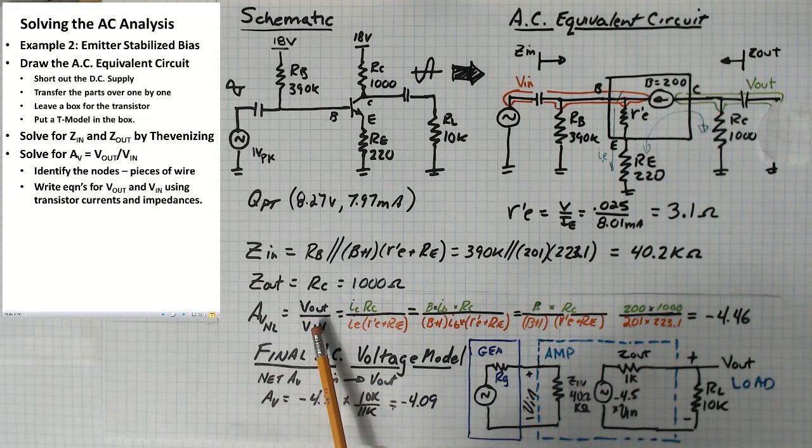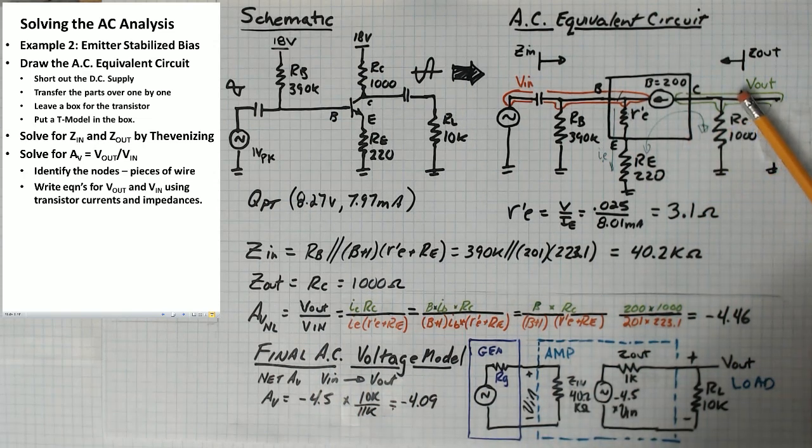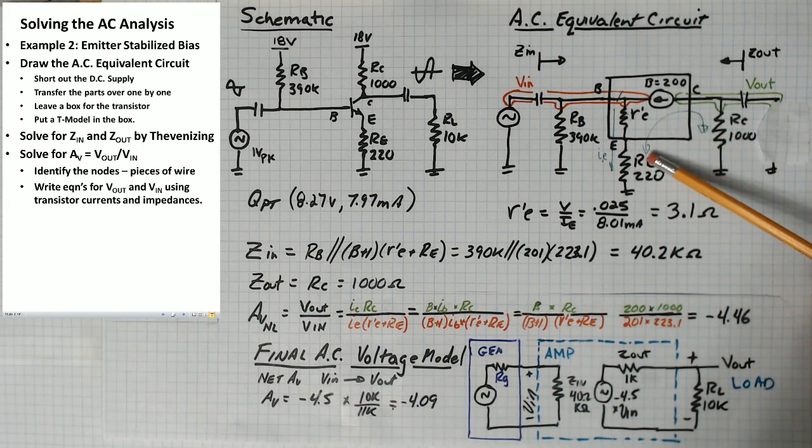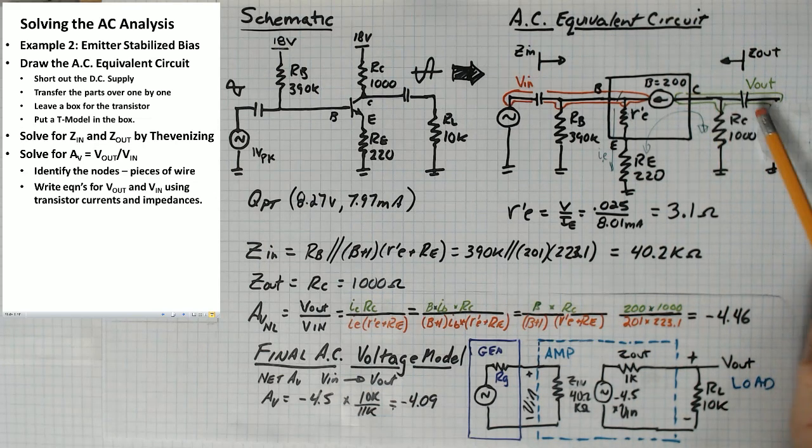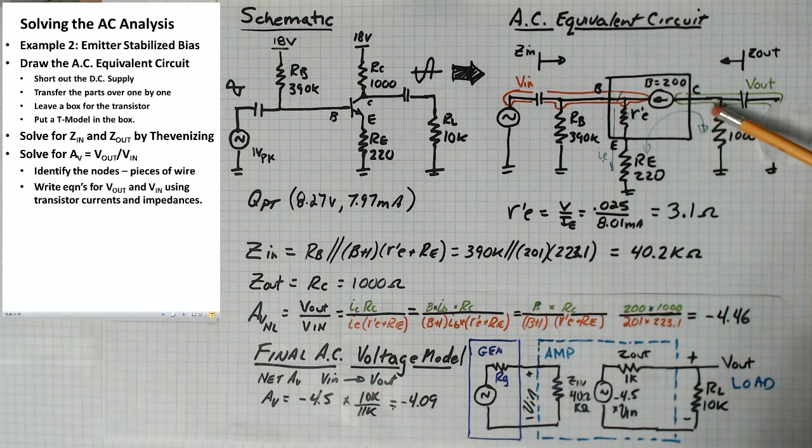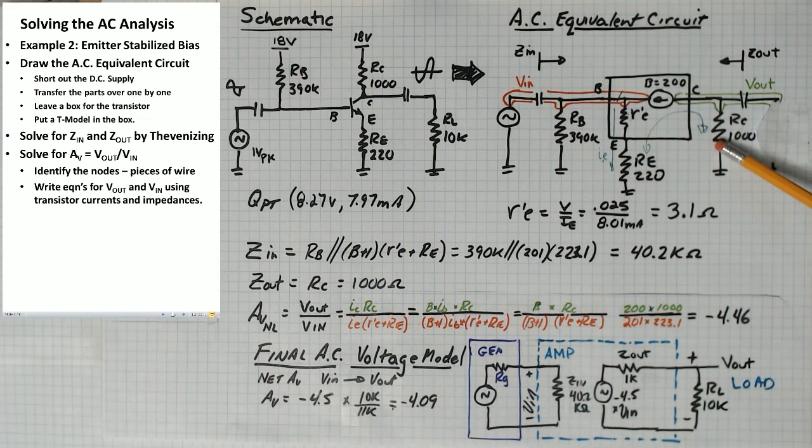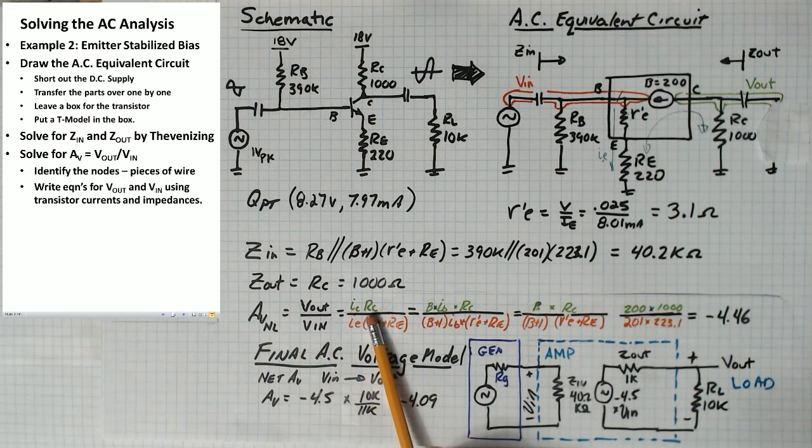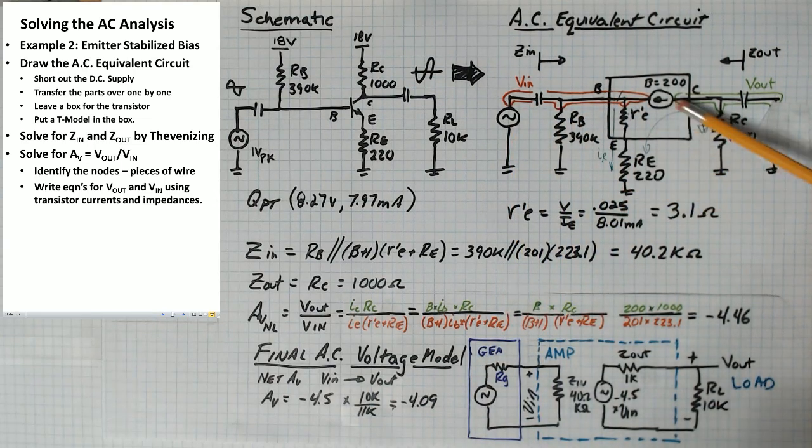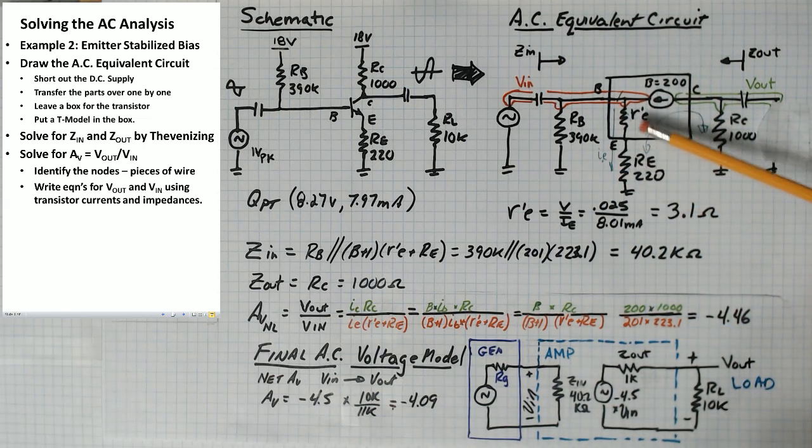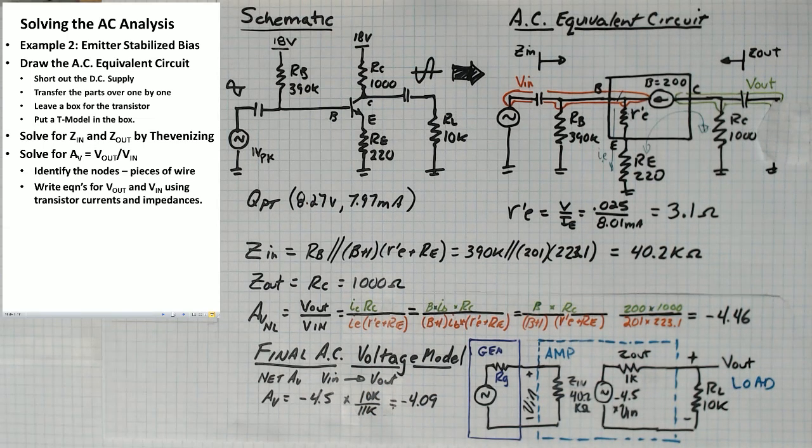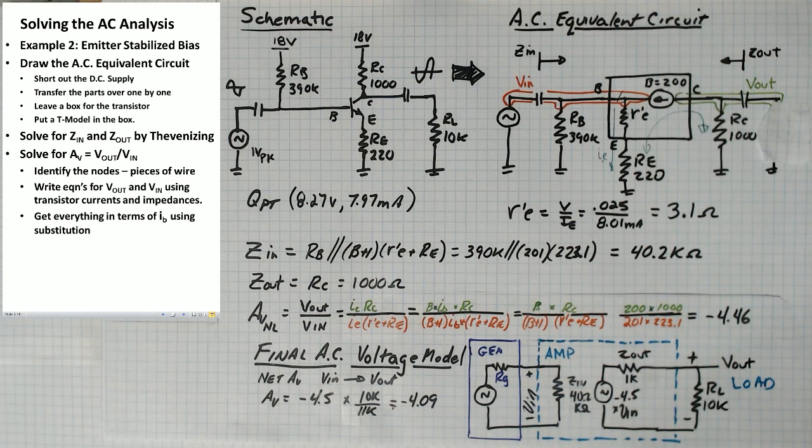So V out, we need to write it in terms of transistor currents and impedances. Here's the output current coming out of this transistor, and when the current comes out of the collector, it can't go that way because it's open circuit. So the only place it can go is down through RC here. So V out would be equal to the collector current times the RC resistor. V in, that's this piece of wire here. Basically, that's the voltage across these two guys. The emitter current is the one that goes through these two resistors. So V in would be equal to IE times R prime E plus RE.